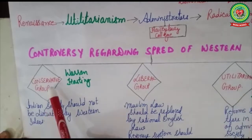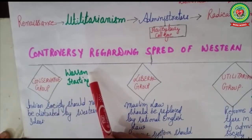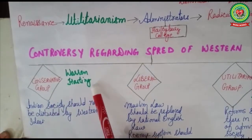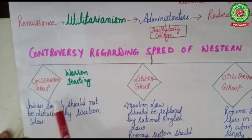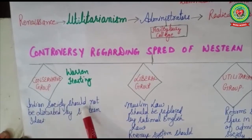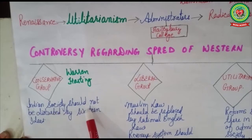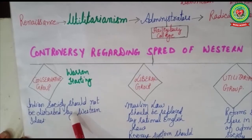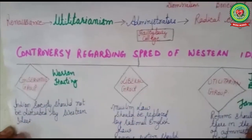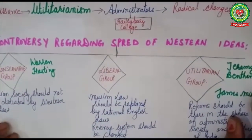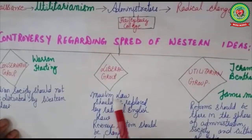The conservative group was led by Warren Hastings, who served India as Governor General. He believed that Indian society should not be disturbed by western or alien ideas — it should be kept aloof from western ideas — and the government should follow the policy of benevolent neutrality.